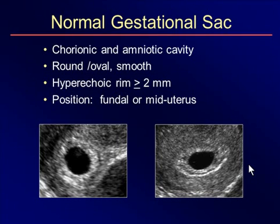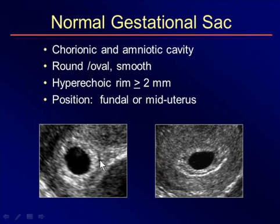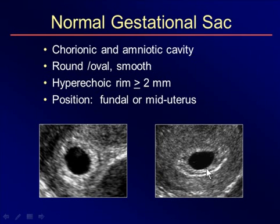The gestational sac is a combination of the chorionic cavity and the amniotic cavity. It shows up as a cystic structure in the center of the uterus, either round or oval in shape, with a very smooth border and a thickened echogenic rim around it. The early small sacs will start being more than two millimeters in thickness, and it gets a little thicker later. So it's like a very thick crayon line around the gestational sac.